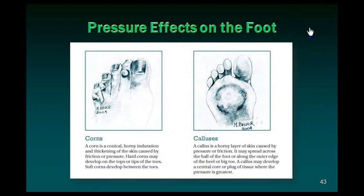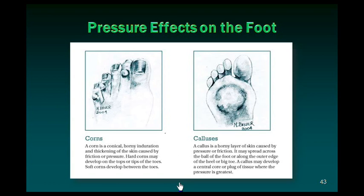We will go through some of the important deformities that can occur in diabetic feet. The common ones are corns. Look here on the second toe, the dorsal aspect — you see a raised conical horny induration and thickening of the skin caused by friction or pressure. Hard corns may develop on the tops or tips of the toes, and soft corns develop between the toes.